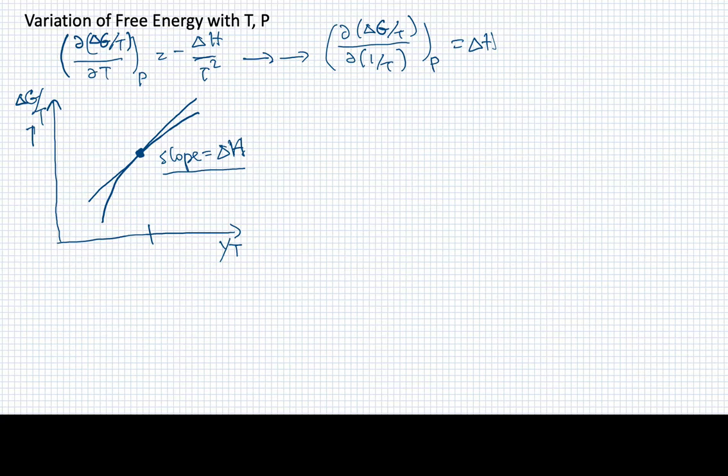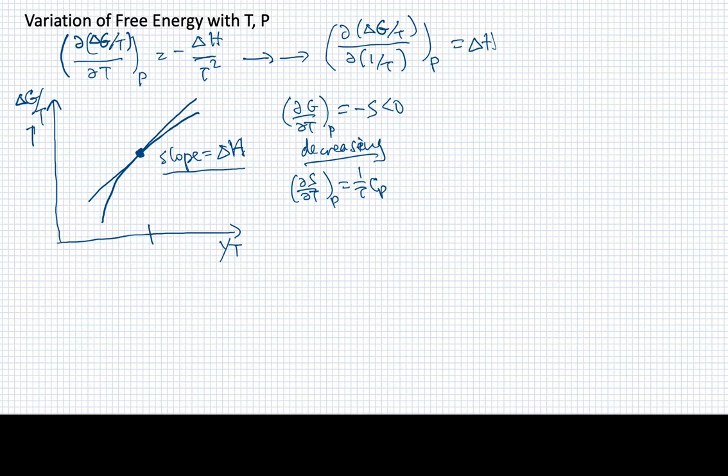So what this means in a greater scheme of things is the following. I have that delta G with respect to temperature at constant pressure is minus S, and this is less than zero. So that's telling me that this is a decreasing function of temperature. I also know that entropy with respect to temperature at constant pressure is given by 1 over T times the constant pressure heat capacity. So this one's getting larger with temperature.